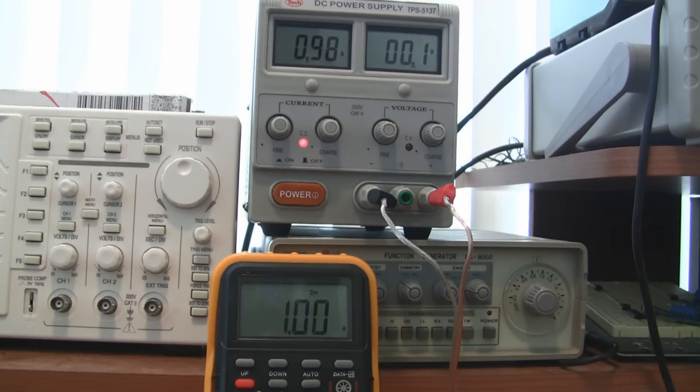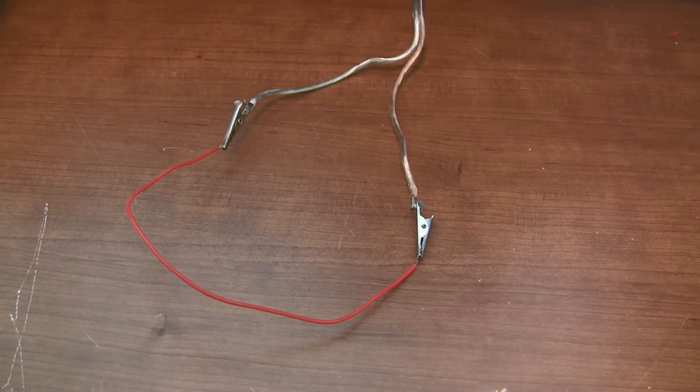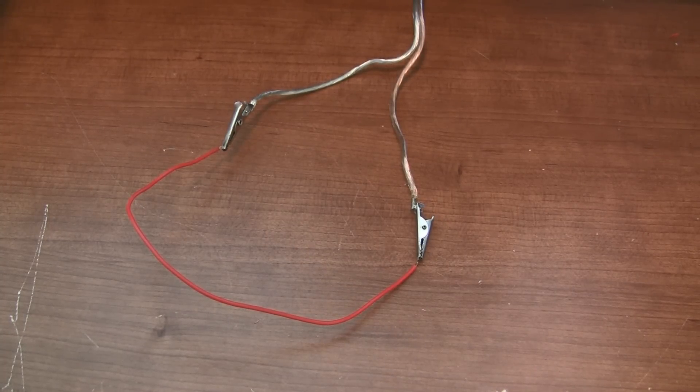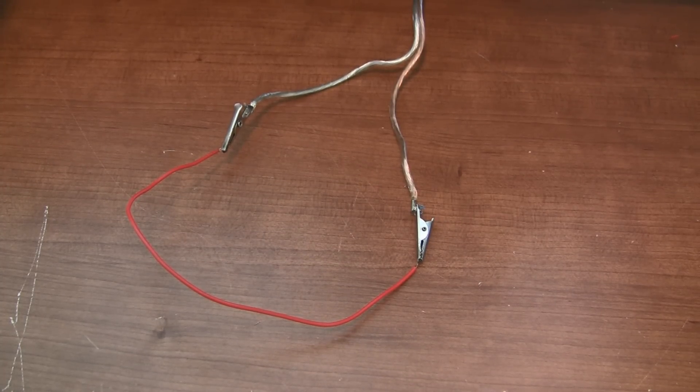Ok, now we have a constant current supply of 1 amp. And you just need to connect your current supply wires to the thing you want to measure, then measure the voltage across it.